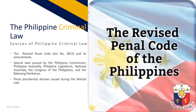The sources of Philippine Criminal Law are: the Revised Penal Code or Act No. 3815 and its amendments; the special laws passed by the Philippine Commission, Philippine Assembly, Philippine Legislature, National Assembly, the Congress of the Philippines, and the Batasang Pambansa; and the penal presidential decrees issued during Martial Law. Note that court decisions are not considered as sources of criminal law since they merely explain the meaning of and apply the law as enacted by the legislative branch of the government.